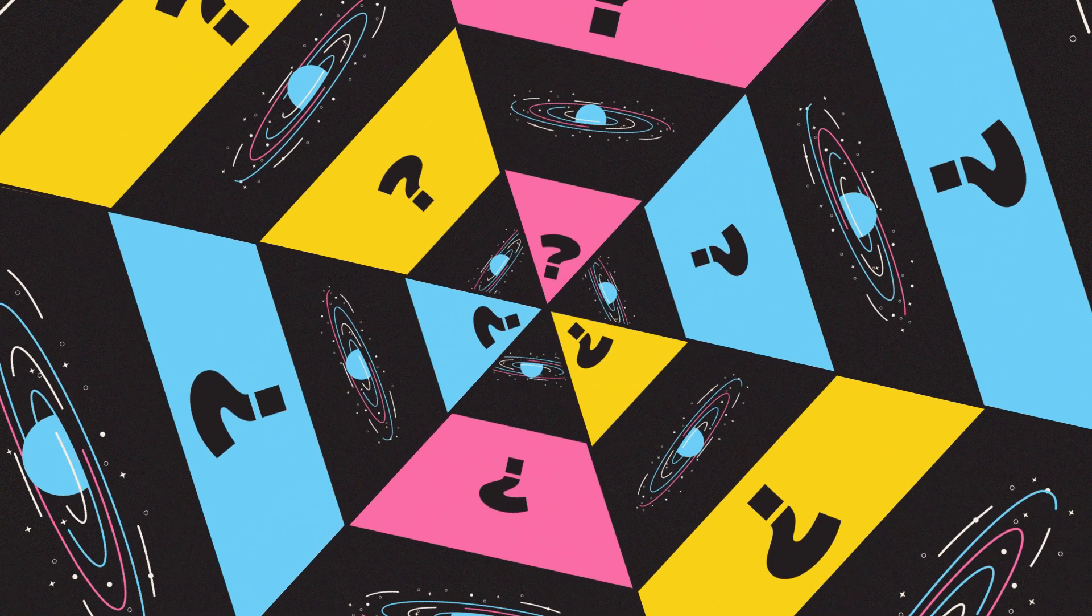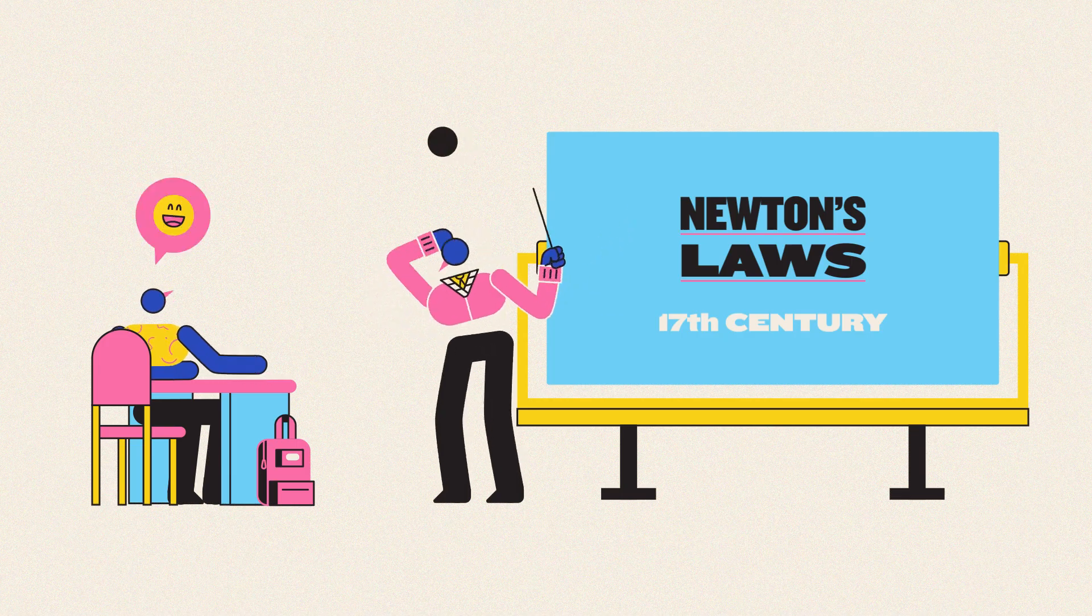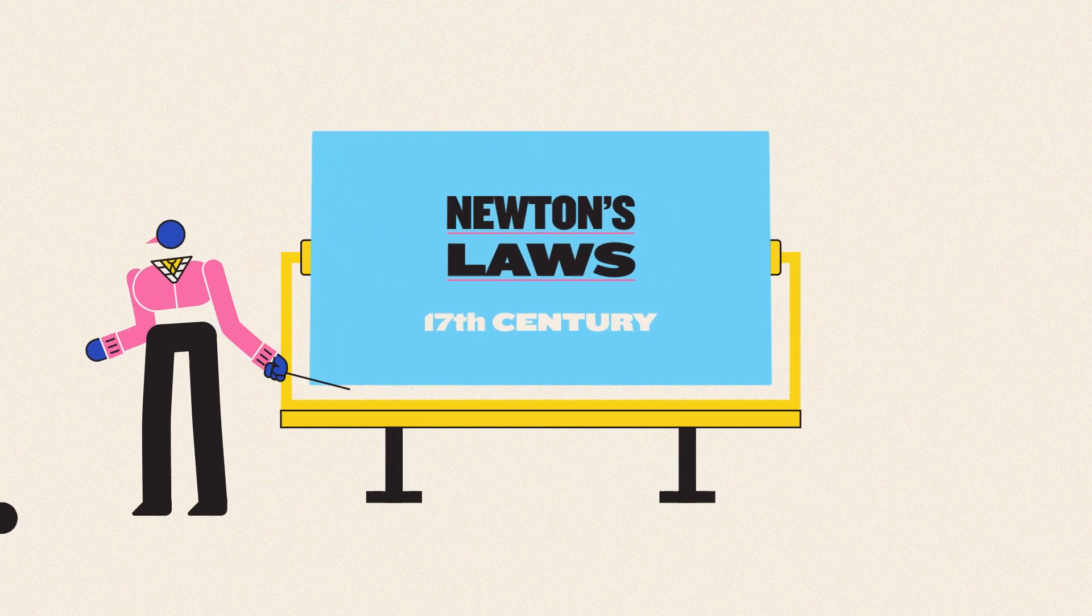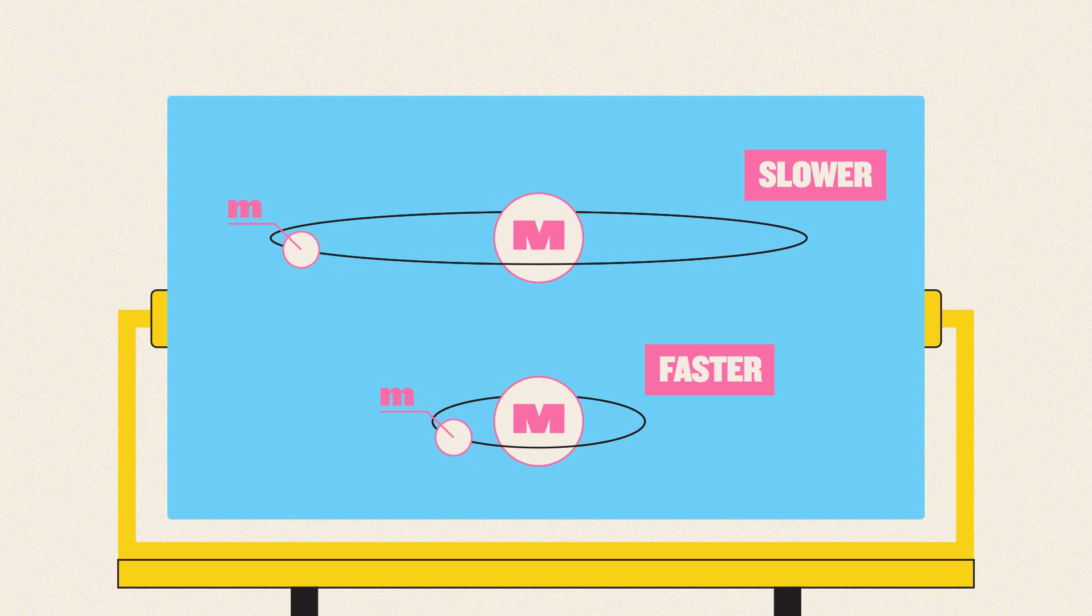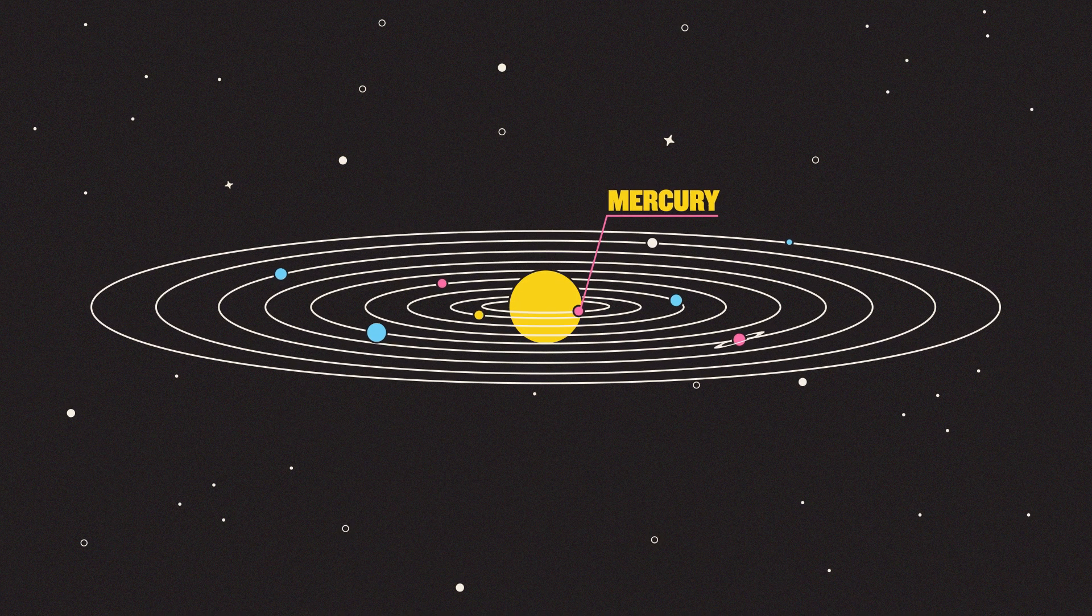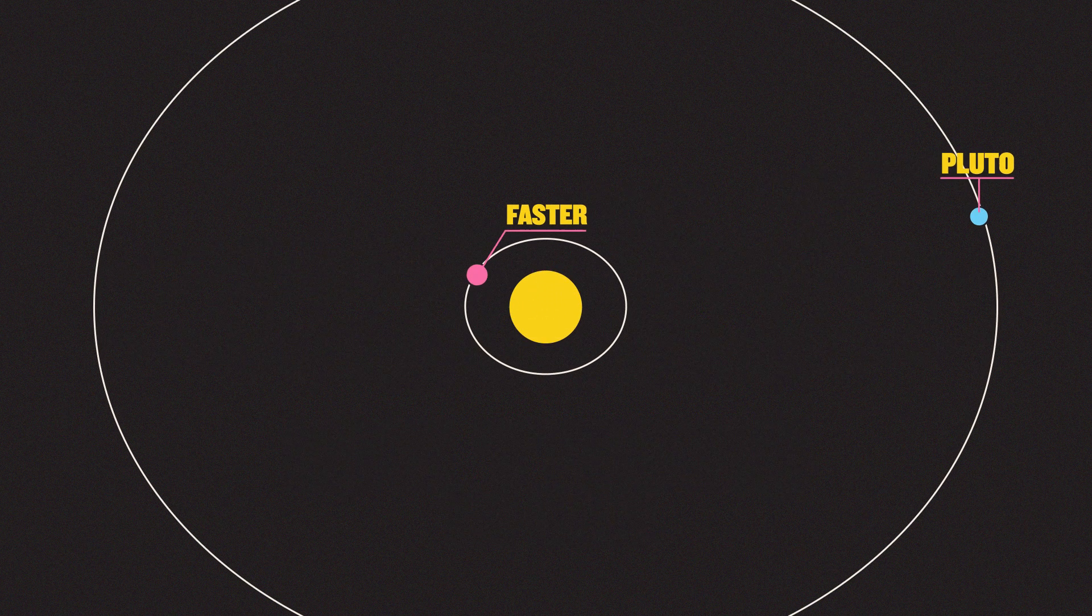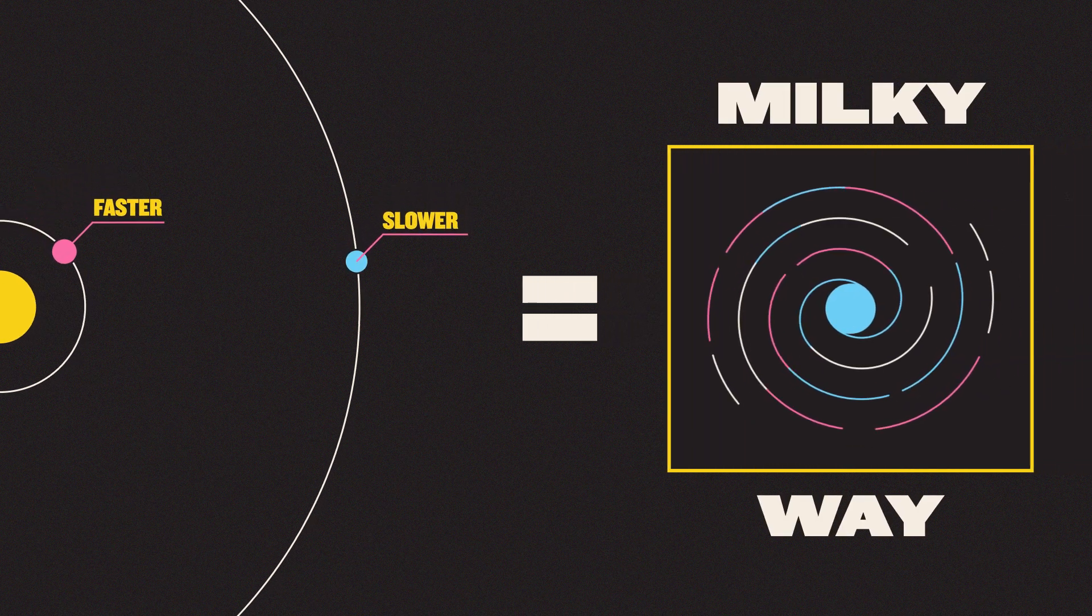At the time, not much was known about how galaxies rotate, but the general assumption was that they would follow the same laws Isaac Newton formulated in the 17th century. Gravity draws objects with mass together, and the closer they get, the faster they move. We see this at work in our solar system, where Mercury orbits the sun at about 10 times the speed of Pluto. And it seemed reasonable for Rubin to expect she would find the same thing happening in our galaxy, the Milky Way.